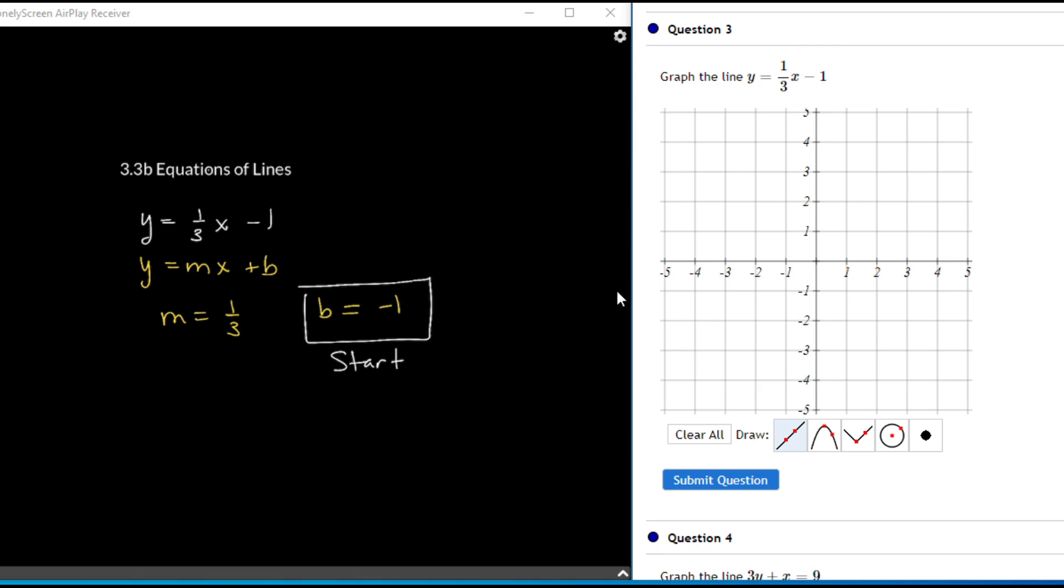I'm going to come over here to the graph and point out something. If you do the point piece first and graph this as negative 1, then go up 1 and over 3 for the slope, you're going to get the wrong answer when you draw this line. I have to clear this anyway.